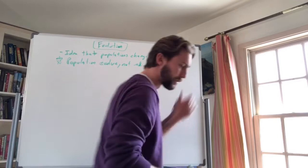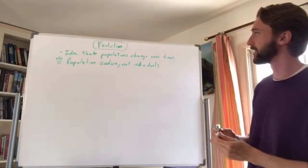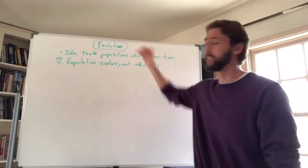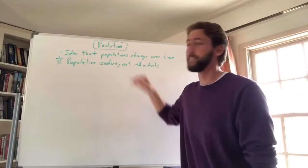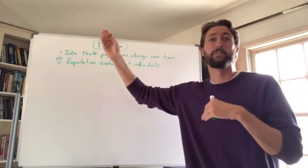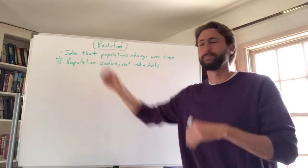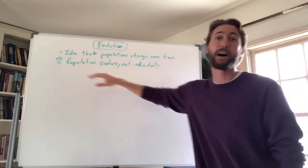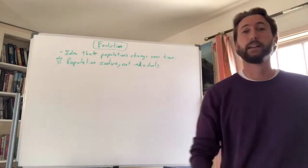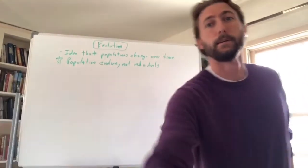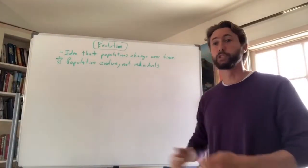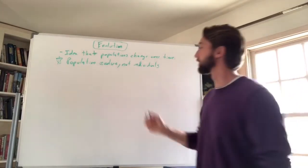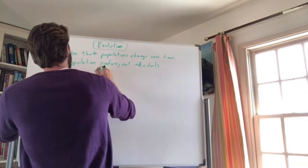Charles Darwin wasn't the only guy thinking about evolution. Another scientist named Lamarck also thought about evolution, but he believed that individuals changed and evolved during their own lifetime — which is not how it works. Evolution is actually about populations changing over time. That's why Darwin is famous — because he came up with the correct idea of natural selection.